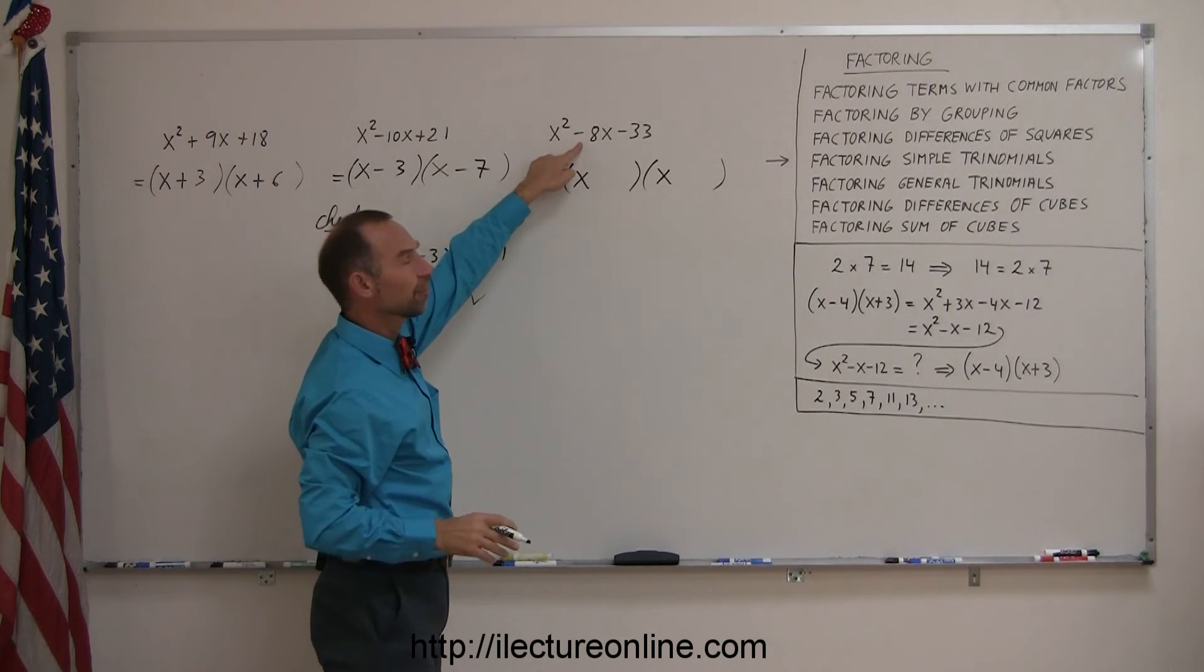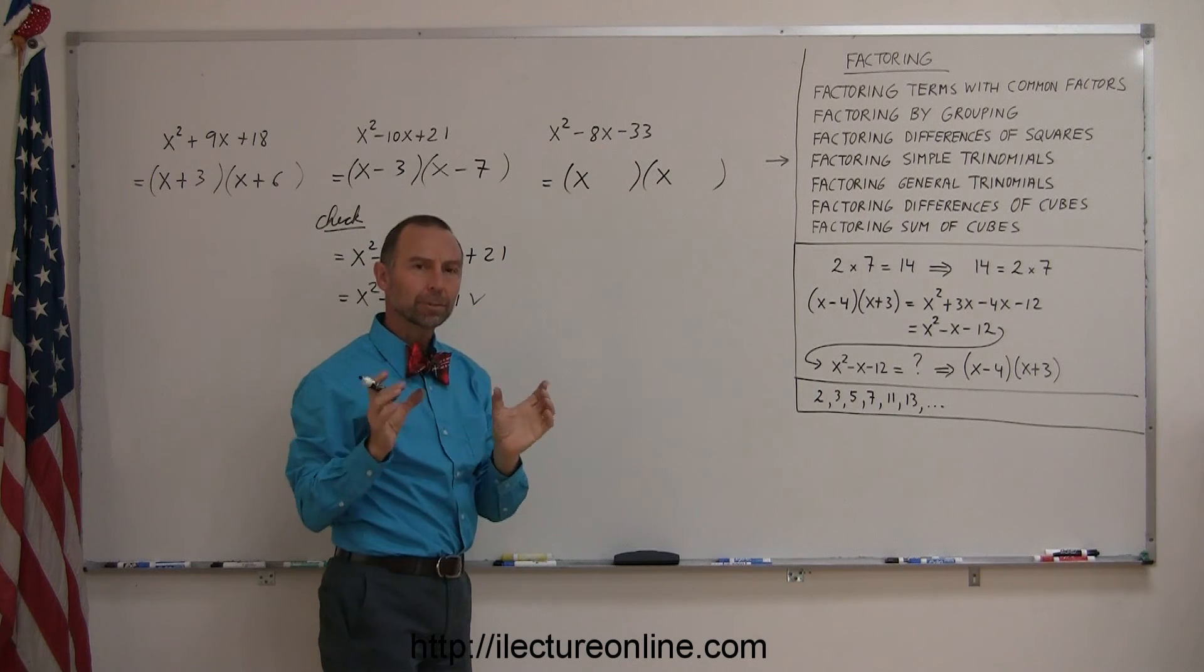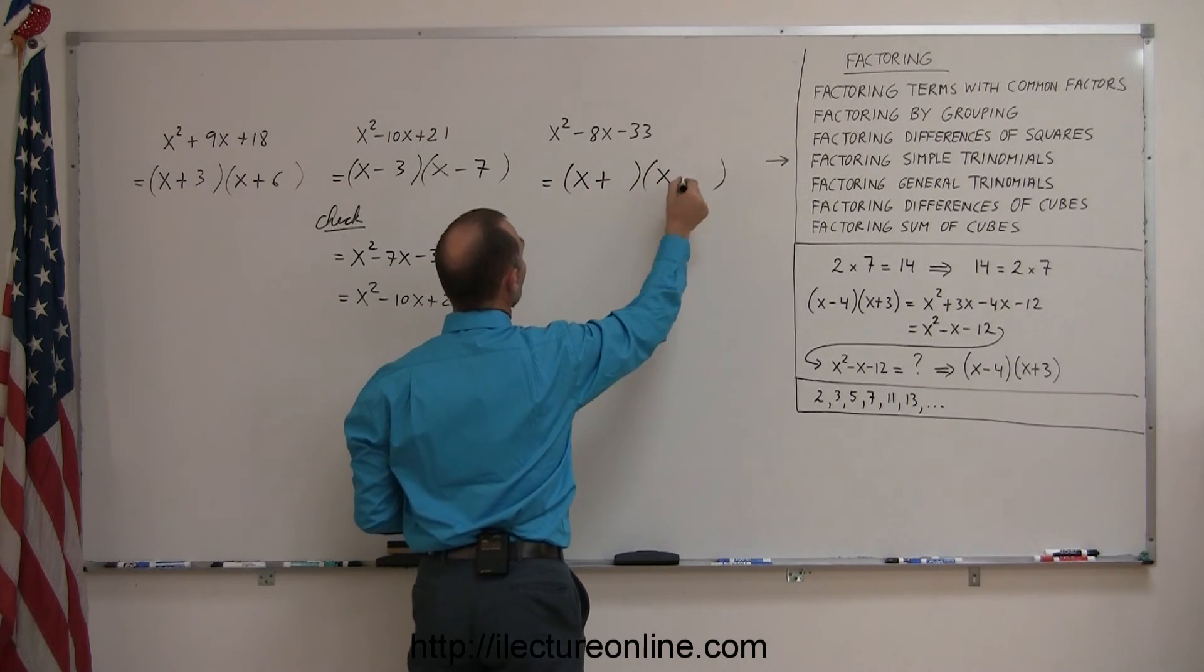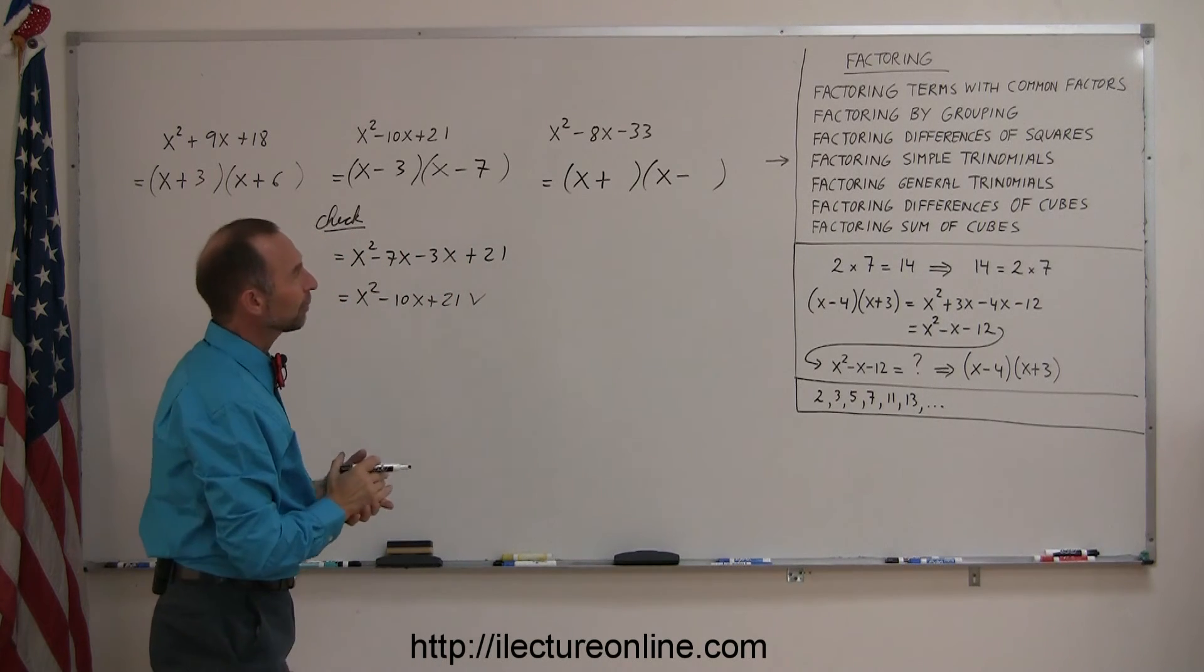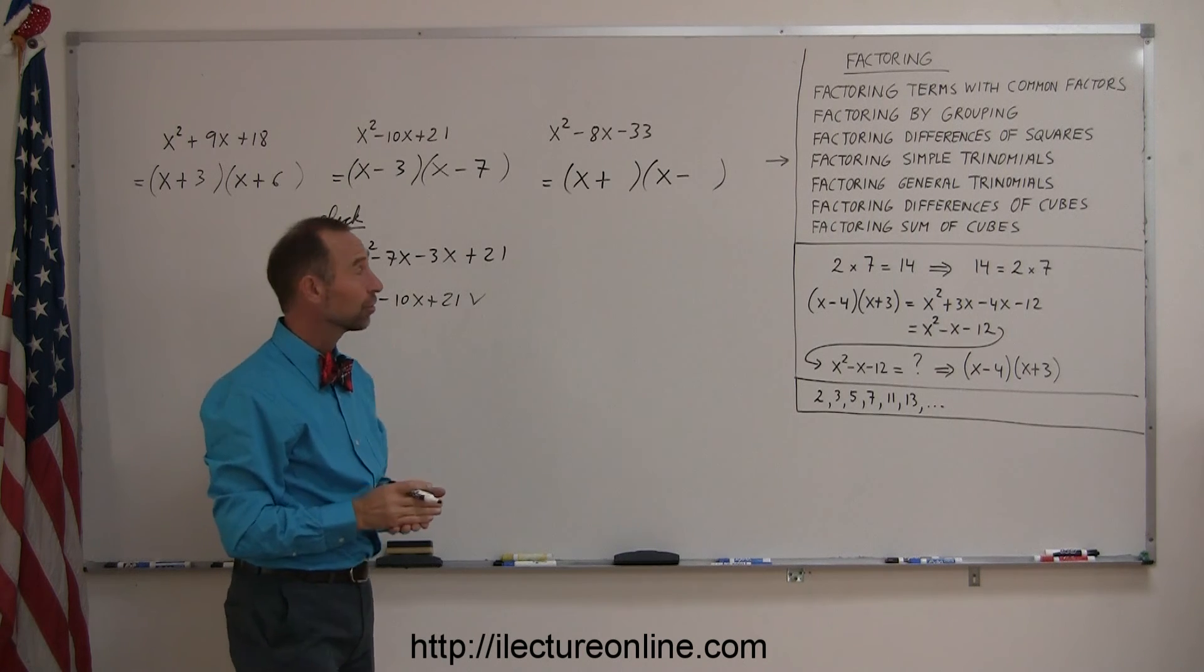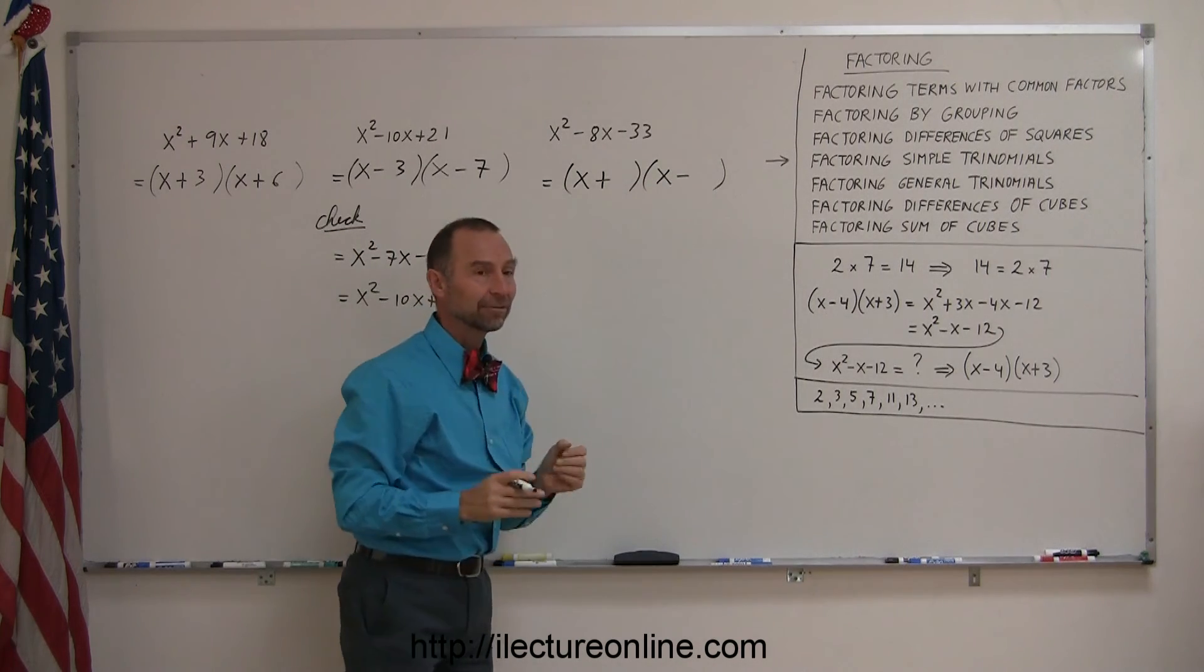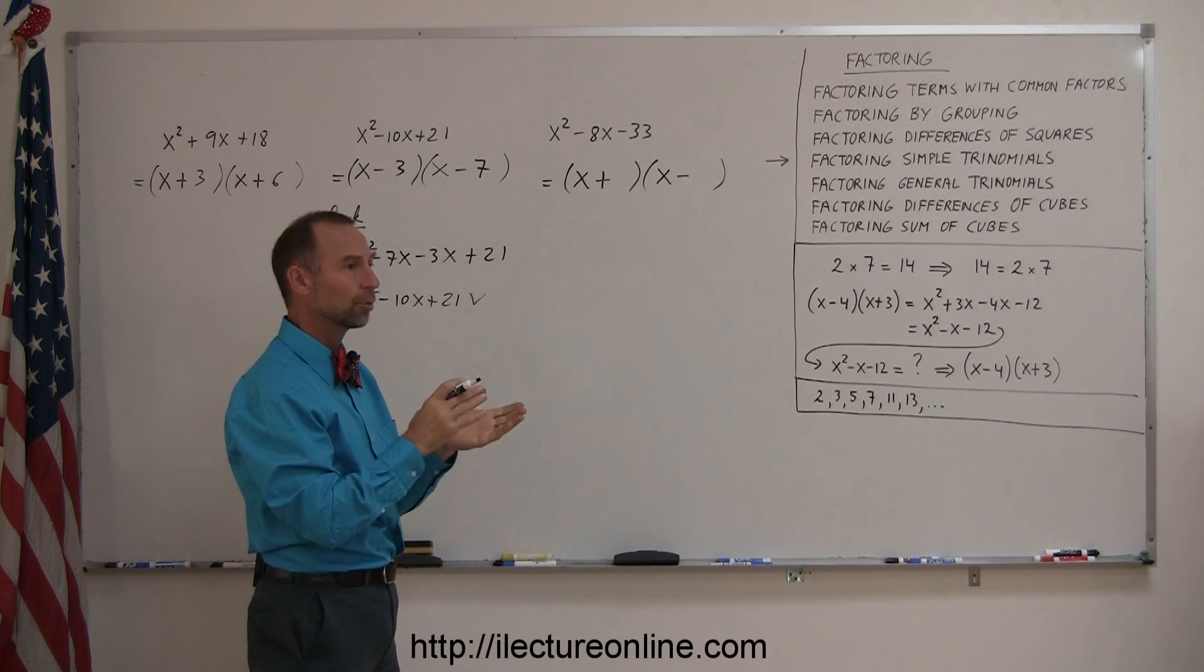Now look at the signs. The middle term is negative, so I need to have at least one negative sign. The last term is negative, and the only way I can multiply two numbers together and end up with a negative is to multiply a positive times a negative. So I need a plus and a minus. I'm looking for two numbers. When I multiply them together, I get 33. When you add them together, you get a negative 8. I know that one is positive and the other one is negative, and when I add them together I get a negative 8, which means the bigger of the two numbers must be negative.